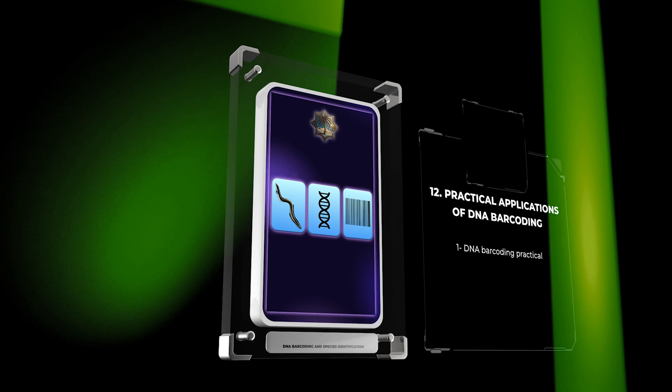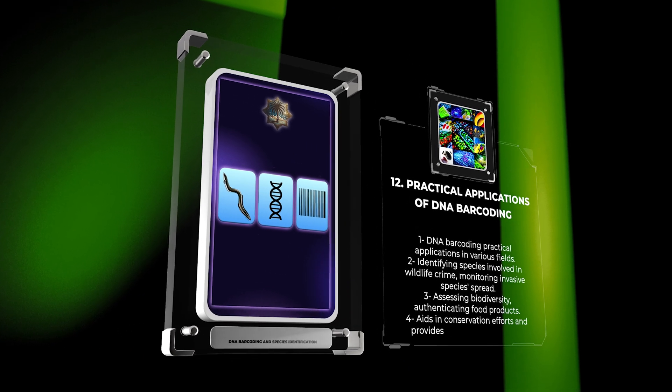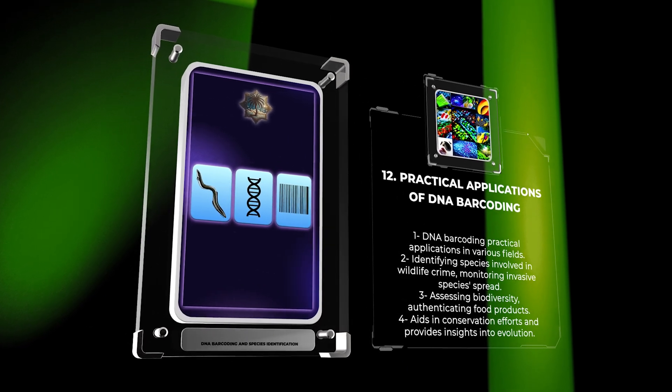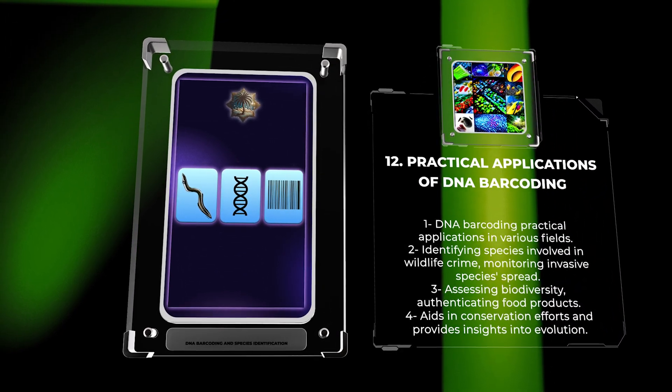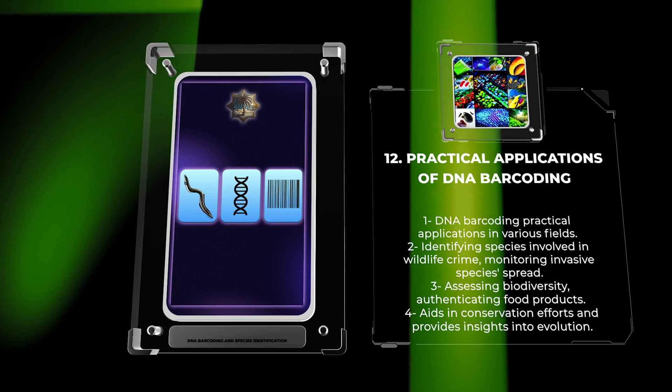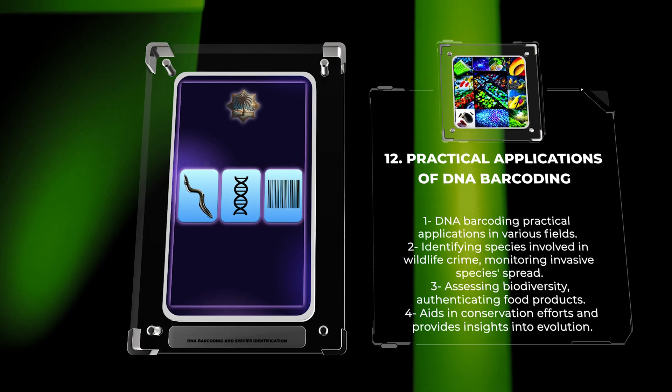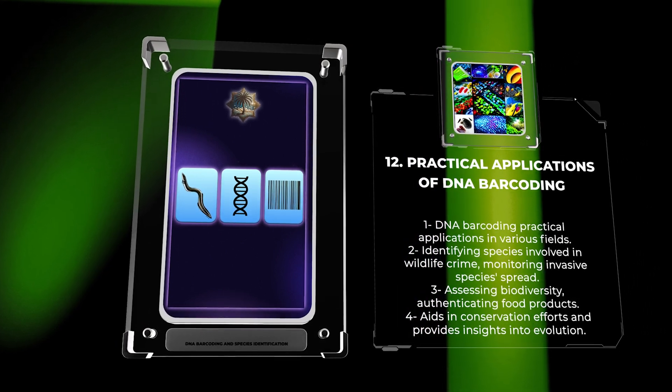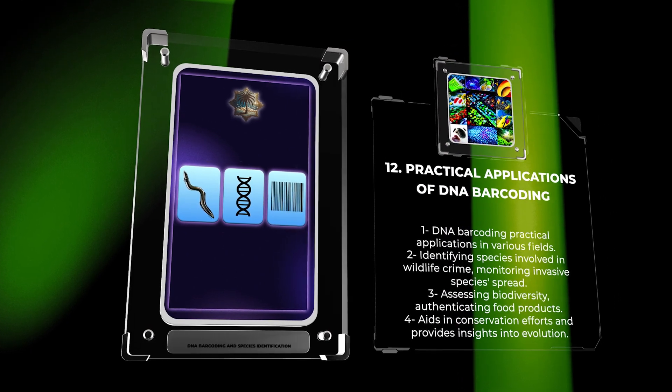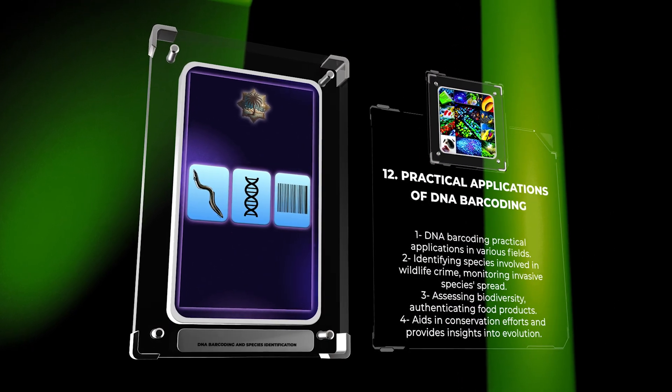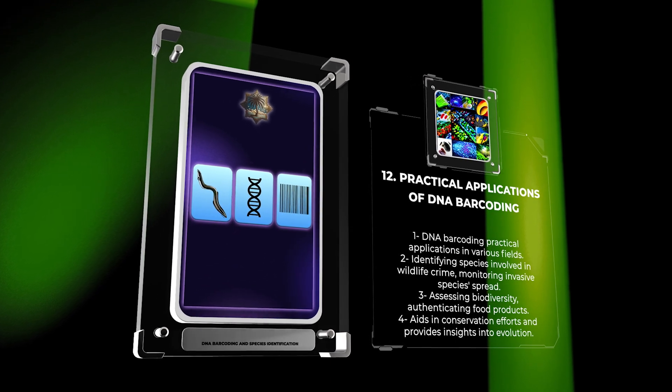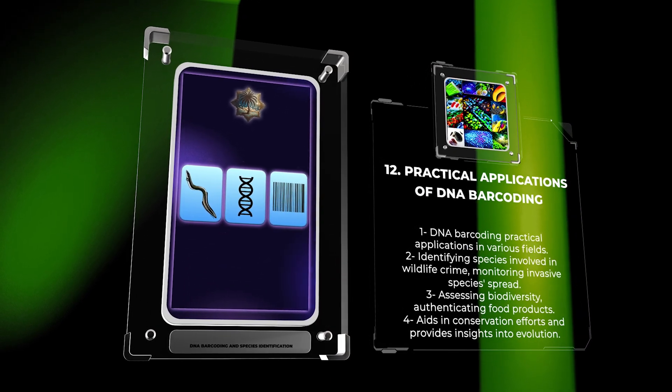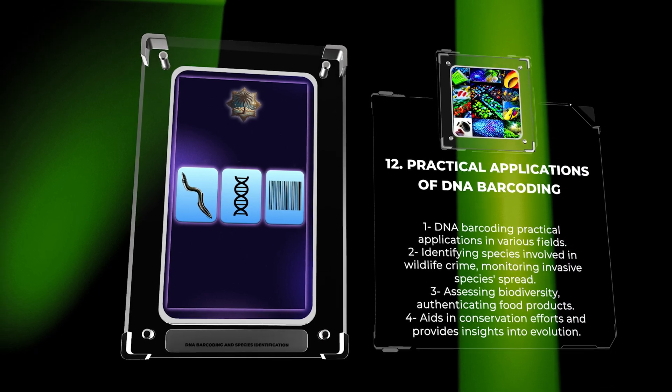DNA barcoding finds practical applications in a wide range of fields. For instance, it aids in identifying species involved in wildlife crime, monitoring invasive species spread, assessing biodiversity in ecological surveys, and authenticating food products. Additionally, DNA barcoding contributes to conservation efforts by aiding in the identification of endangered species and monitoring population dynamics. It also provides valuable insights into evolutionary processes and species diversification.